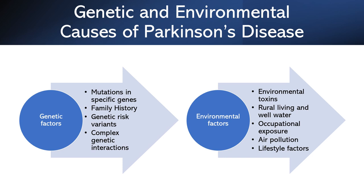Certain occupations, such as farming, welding, and manufacturing, may involve exposure to environmental toxins or chemicals. Occupational exposure to pesticides, solvents, and other chemicals has been associated with an increased risk. Exposure to air pollution, particularly fine particulate matter and other airborne pollutants, has also been suggested to be associated with an increased risk. Air pollution may result from industrial emissions, vehicle exhaust, or other sources, and long-term exposure may contribute to development of the disease.